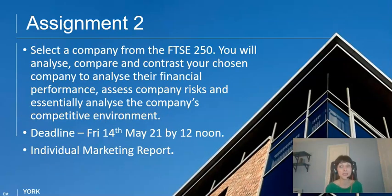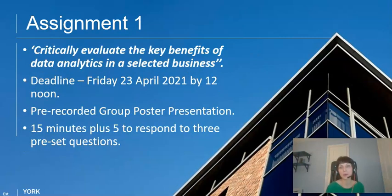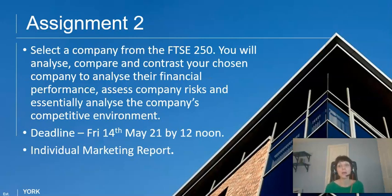The second assignment is an independent piece of work — you're doing this one on your own. You're going to select a company from the FTSE 250. You could in theory pick the same organisation as for the first assessment, in which case you'll have already done some analysis on it. However, this is definitely an individual piece of work, not to be done in groups.